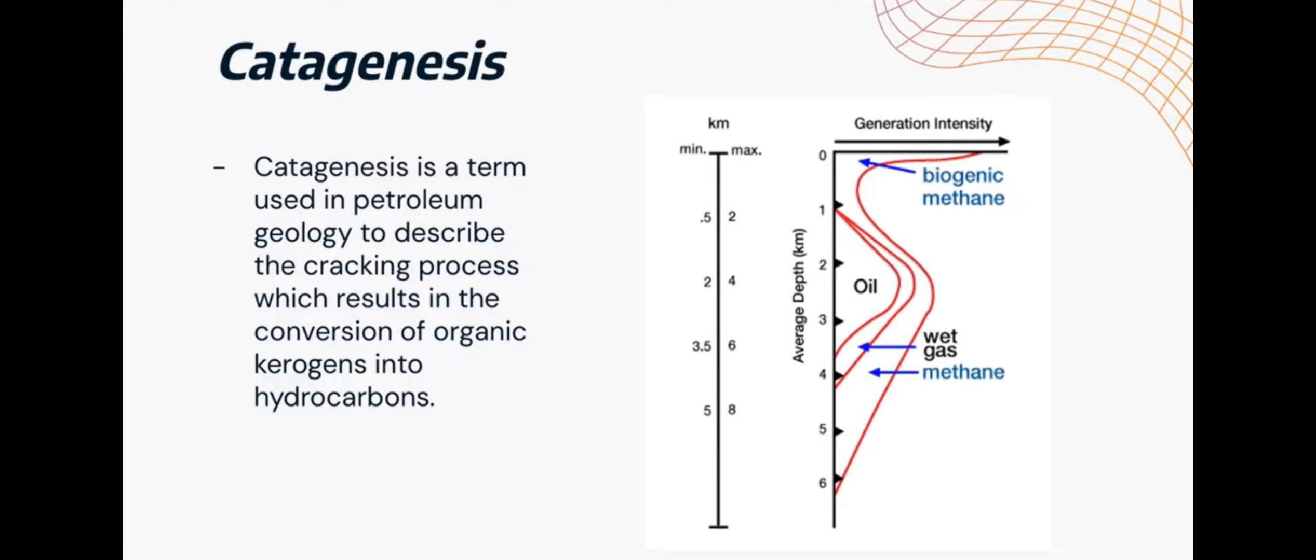Catagenesis is a term used in petroleum geology to describe the cracking process, which results in the conversion of organic kerogen into hydrocarbons, and this is the second stage of maturation of organic carbon on the path to become graphite.